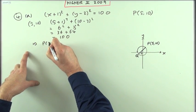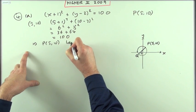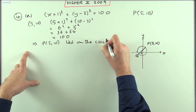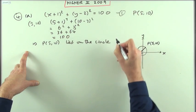Which means that P lies on the circle, or maybe I could give it a name, the circle one.